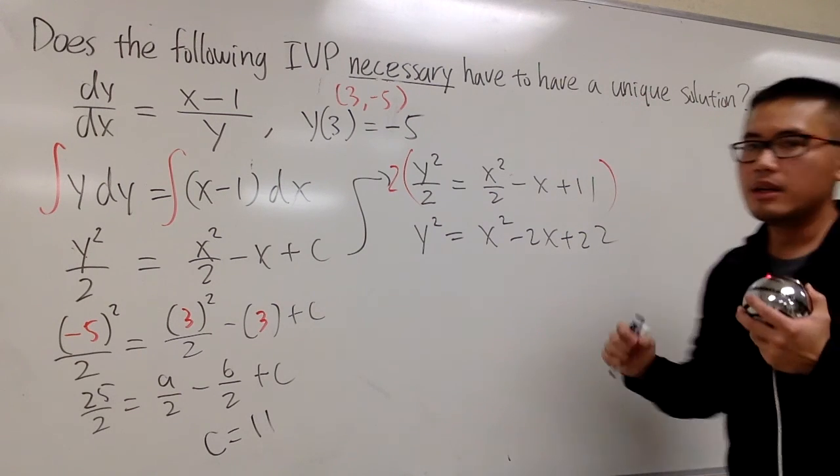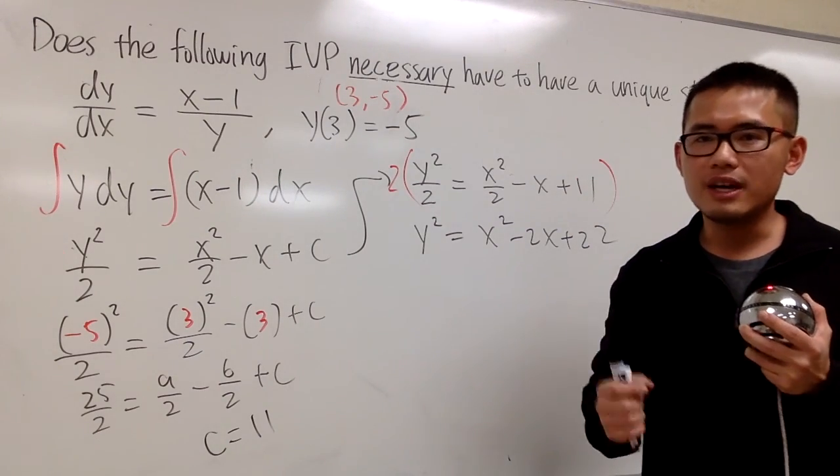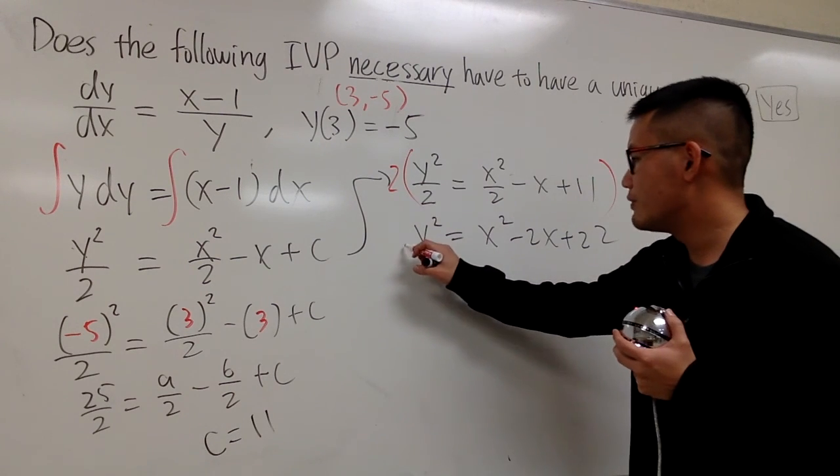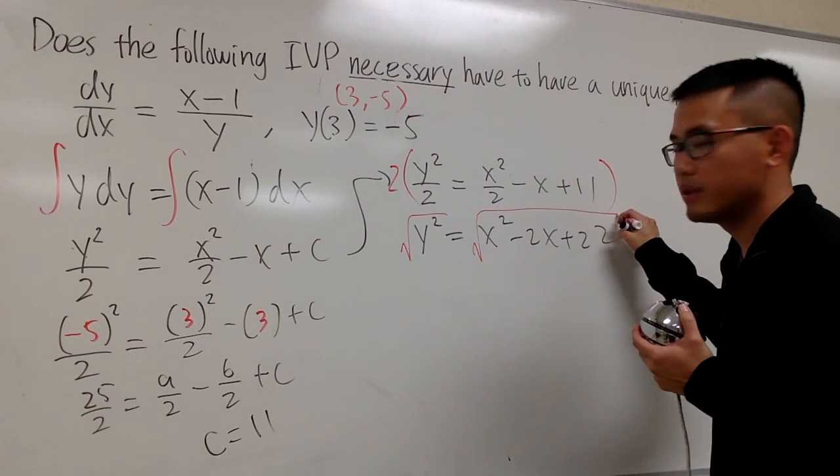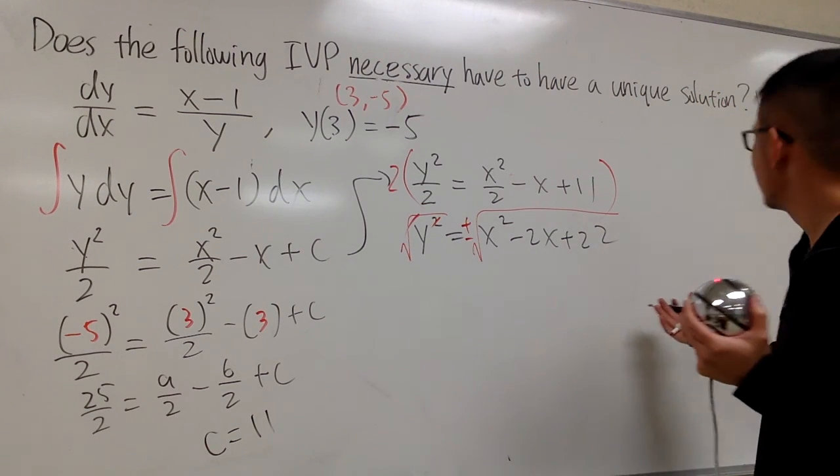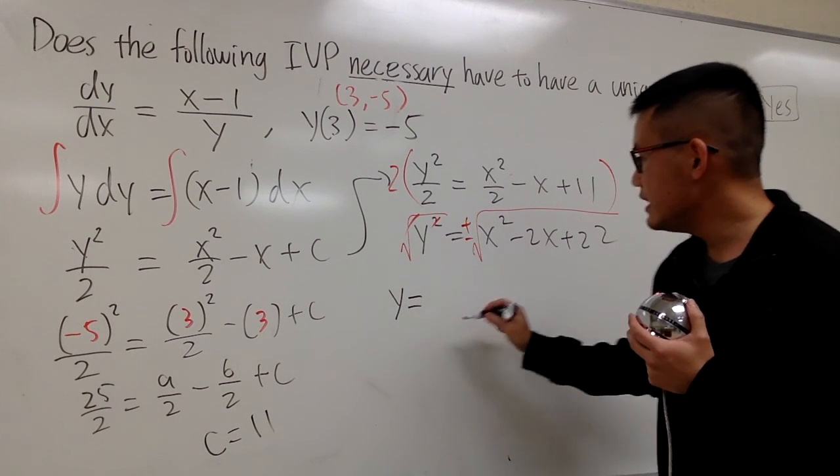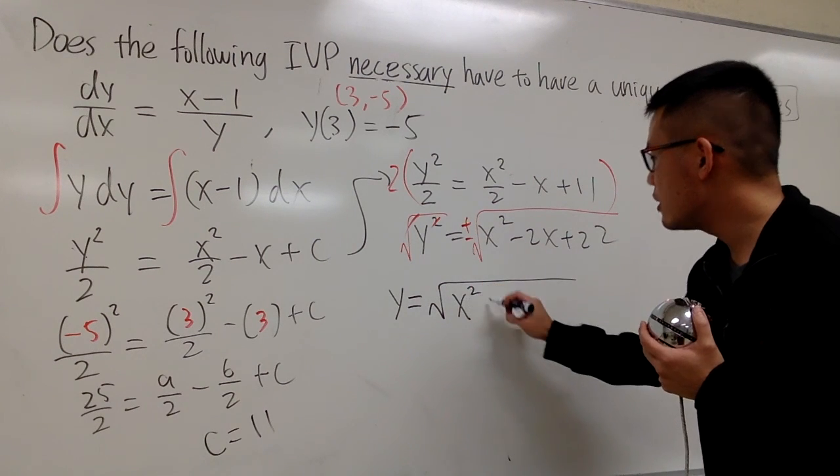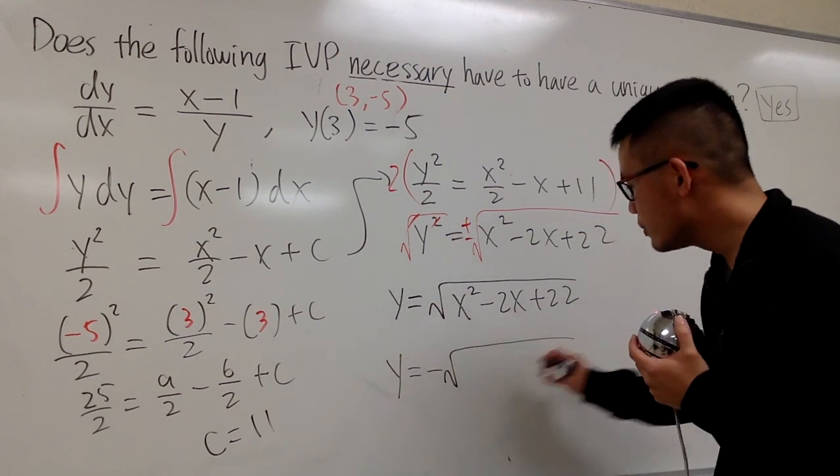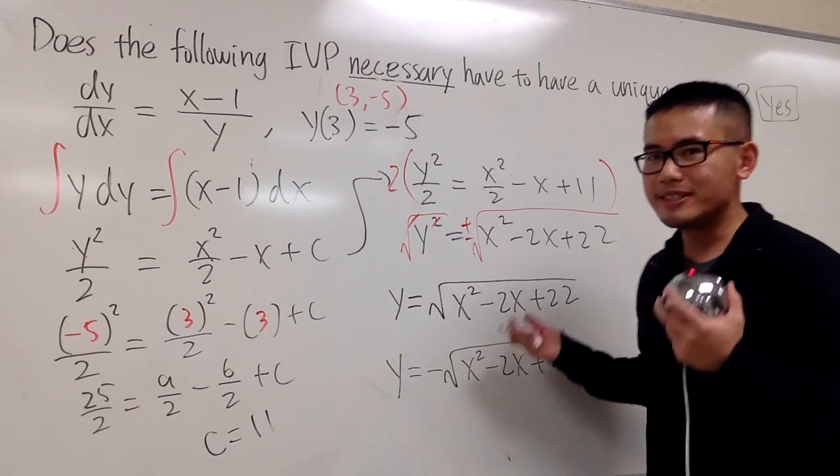By the way, this right here, a unique solution, it's a y function of x. A unique solution means y has to be a function of x, y(x) only. So, we must isolate the y when you are talking about these kind of things. We still have to take the square root on both sides. And when you do the square root on both sides, yes, they cancel, but don't forget to put a plus minus. And now it seems like, earlier I said I must have a unique solution. But it seems like we have the first answer, y = +√(x² - 2x + 22). And the other one, y = -√(x² - 2x + 22). It seems like we still end up with two answers.